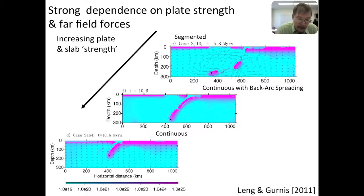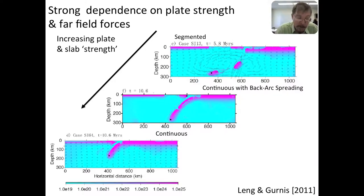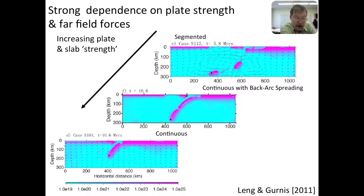One mode is continuous with back arc spreading — the slab founders and you get intense rollback. If you make the plate a little bit stronger, you still get subduction initiation but no back arc spreading — possibly analogous to subduction zones without back arc spreading. If you make the plate incredibly weak, you get a segmented mode where the little slab drops off in a series of pods. These three modes are really quite interesting and we've applied this to various subduction zones.